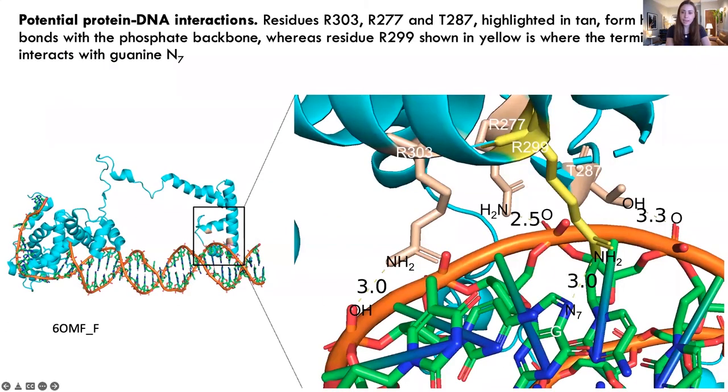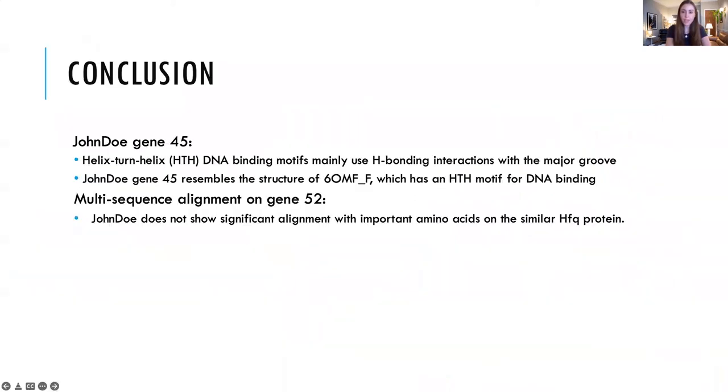By looking at the protein-DNA interactions in 6OMF, we see that this protein undergoes hydrogen bonding with the phosphate backbone, as shown in the tan-colored residues. There are also certain residues involved in hydrogen bonding with the bases to ensure the specificity of DNA recognition, such as arginine 299, that forms a hydrogen bond with the guanine nitrogen at position 7. Based on what we observed for John Doe gene 45, we conclude that the C terminus helix-turn-helix DNA motif is involved in DNA binding, which mainly occurs through hydrogen bonding with both the phosphate backbone and unique bases to ensure target specificity.